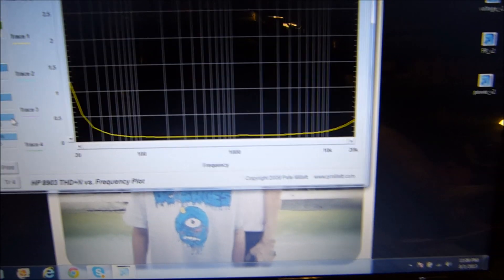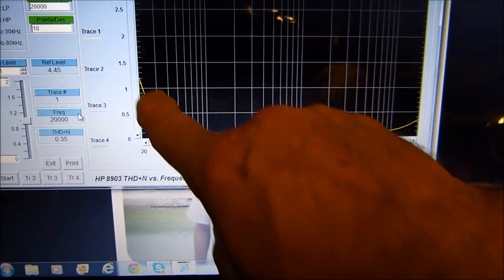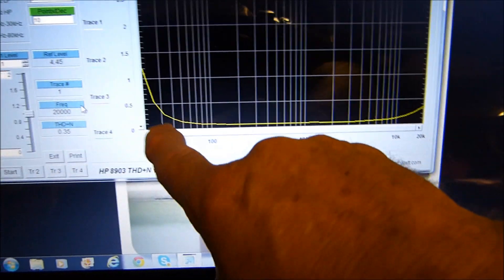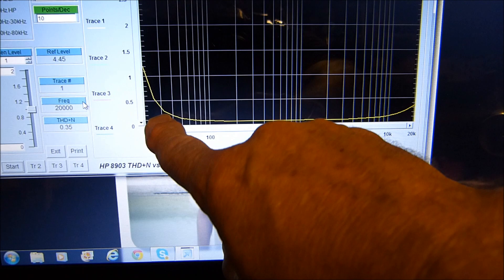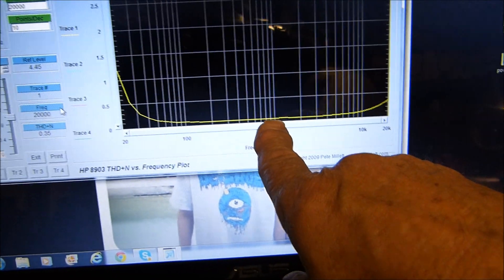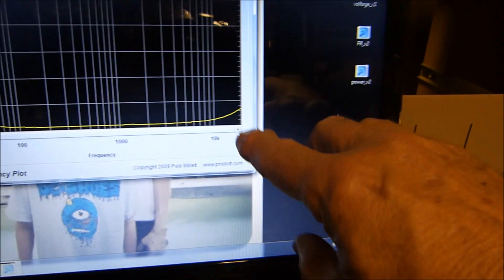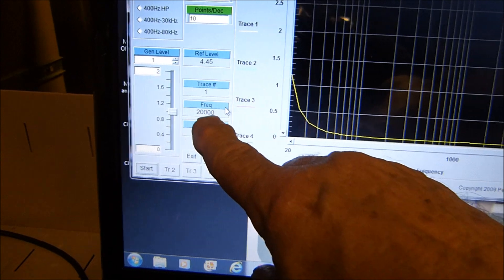There it is. Okay, at 20 hertz it was up here at 1.2, dropped down to about 0.3 at 30 hertz, way down here in the 0.1 range, and at 20 kilohertz it looks like it's about 0.3. Here it is, 0.35 at 20. So there it is, there's the old Macintosh MC 75.